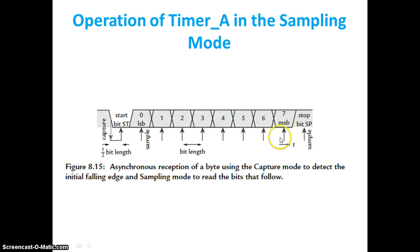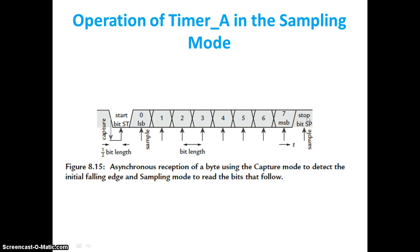For the subsequent eight data bits, we continuously increment the TACCR register by one full bit length at each interrupt, reading and storing the input value at the middle of each bit period. After all eight bits have been received, we check one more time period for the stop bit — it must be exactly equal to one. If the value is not one, we consider there to be some miscalculation or error and discard the entire byte.